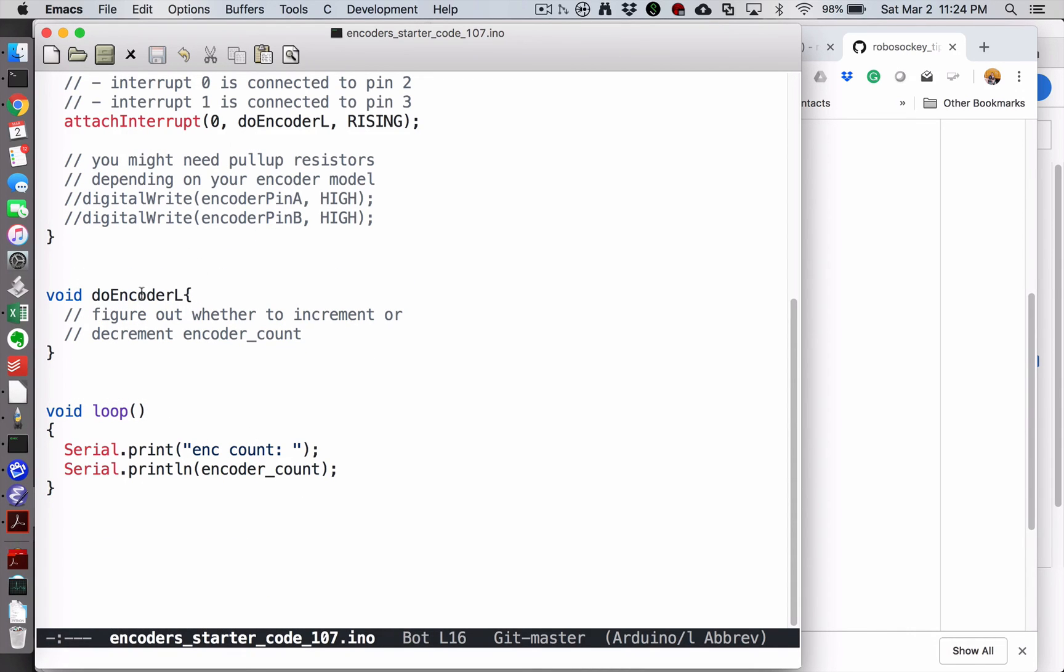Part of why that has to be a global variable is that interrupt service routines can't have inputs or outputs. We're setting this global variable so that we can access it everywhere else. In my loop, you would probably need to modify this so that it causes the motor to move. I'm just printing out the encoder count.